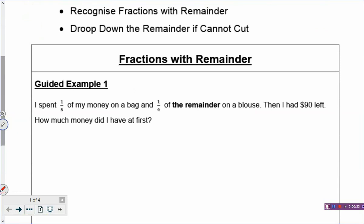I spend one-fifth of my money. If you notice carefully, this fraction refers to my money — it is referring to part of a group. What is the group? My money is the group. And what happened to this money? I spend some of the money. So, my money has five boxes. Out of these five boxes, I spend one box on the bag. So, this fraction refers to part of a group, or fraction of a set.